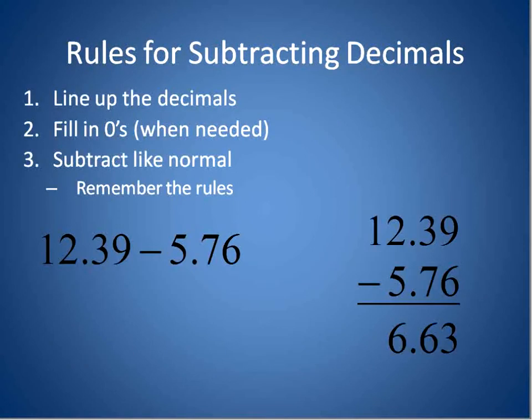Let's go ahead and take a look at the rules for subtracting decimals. You line up the decimals. Fill in the zeros where I need it. Subtract like normal. Remember the rules. That's it. So here's an example. 12.39 minus 5.67. So if I have 12.39 and I subtract 5.76, then I will just line up my decimals like this and subtract like normal. I'm subtracting just like this is 1,239 and this is 576. You subtract exactly the same way. You can even erase the decimals if you want to make it easier so it's not complicated for you. You line up the decimals. Fill in any zeros. And just subtract like normal.